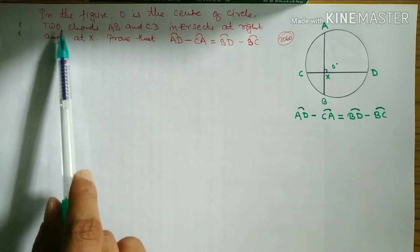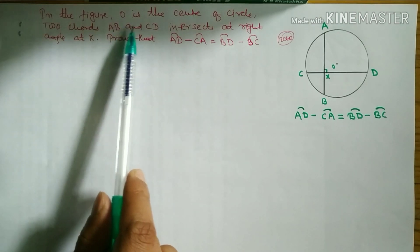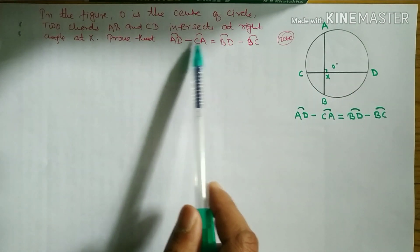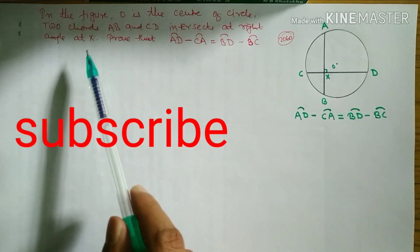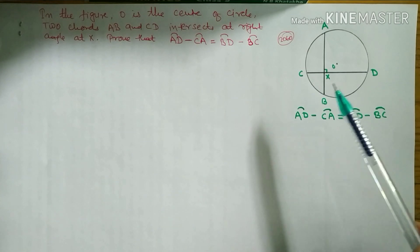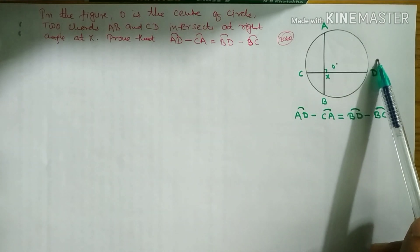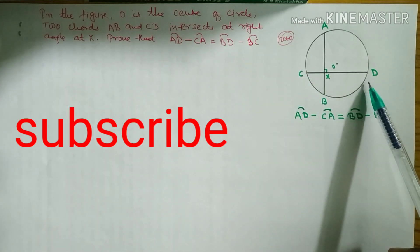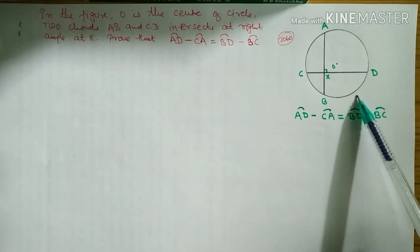Now look at the question first. In the figure, O is the center of the circle. Two chords AB and CD intersect at point X. Prove that arc AD minus arc CA is equal to arc BD minus arc BC. We have to show this.